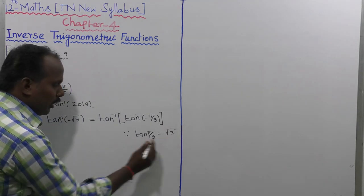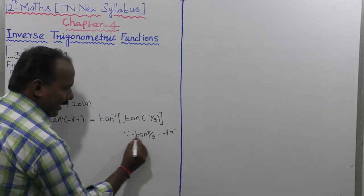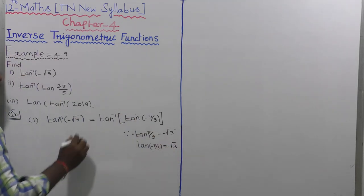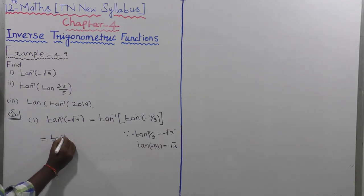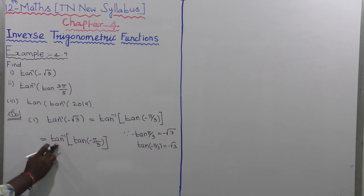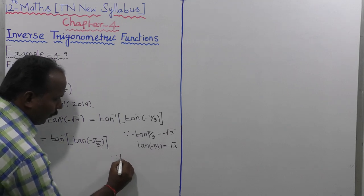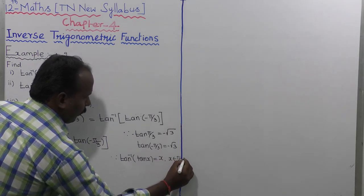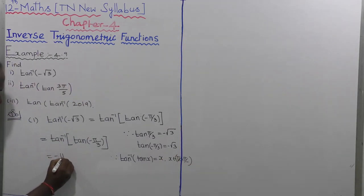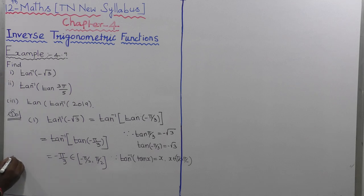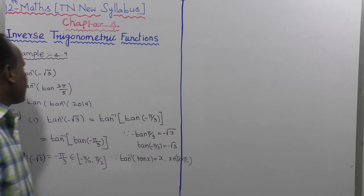Since minus tan(π/3) = −√3, this is replaced as tan inverse of tan of minus π/3. Using the formula tan inverse of tan(x) = x, where x belongs to the interval (−π/2, +π/2), and since −π/3 belongs to (−π/2, +π/2), the first subdivision is completed: tan inverse of minus root 3 equals minus π/3.